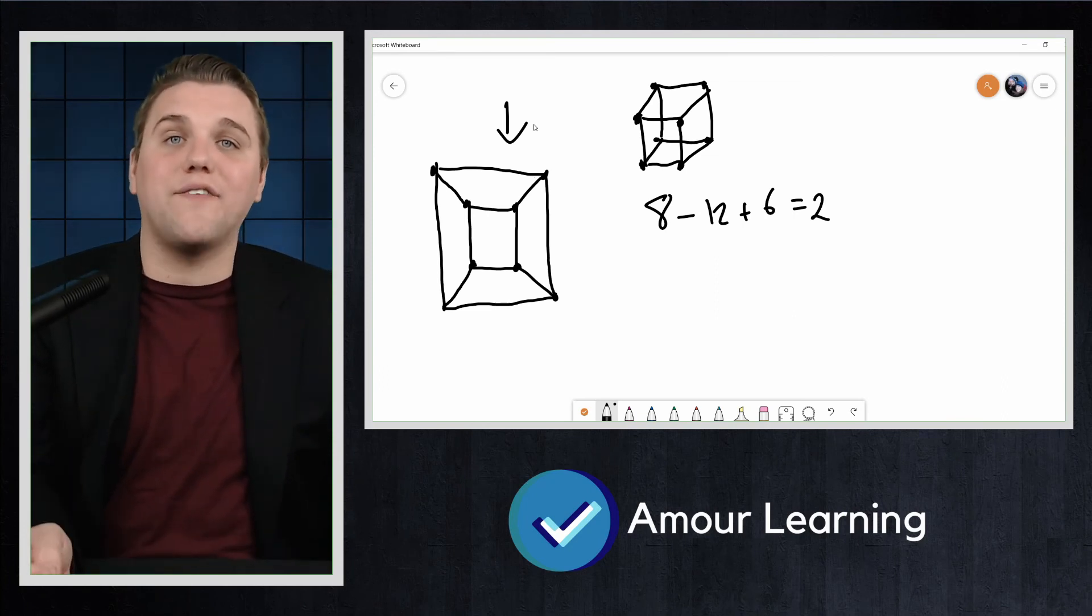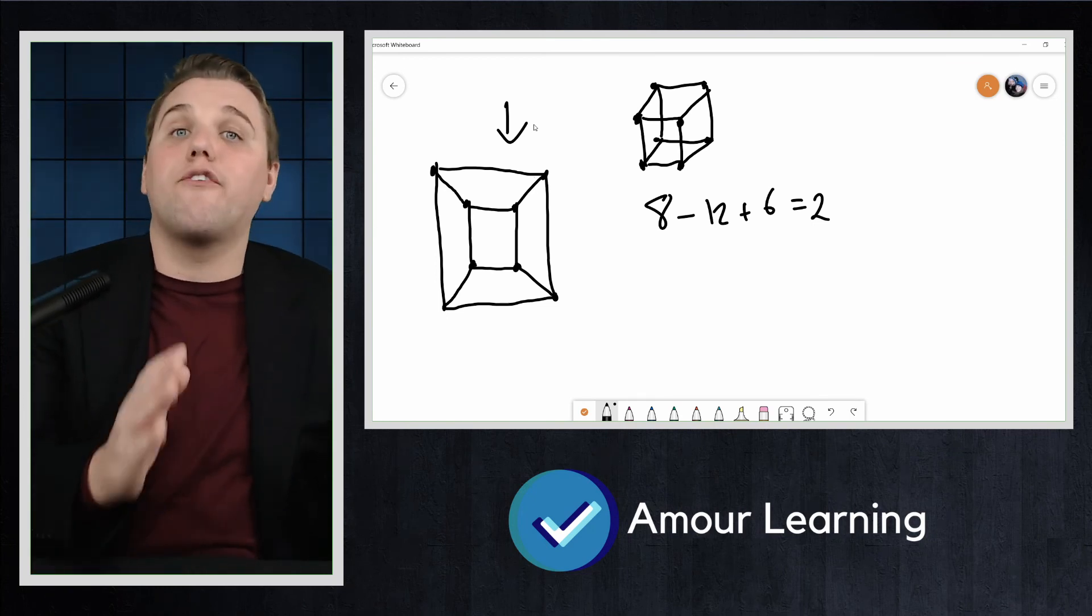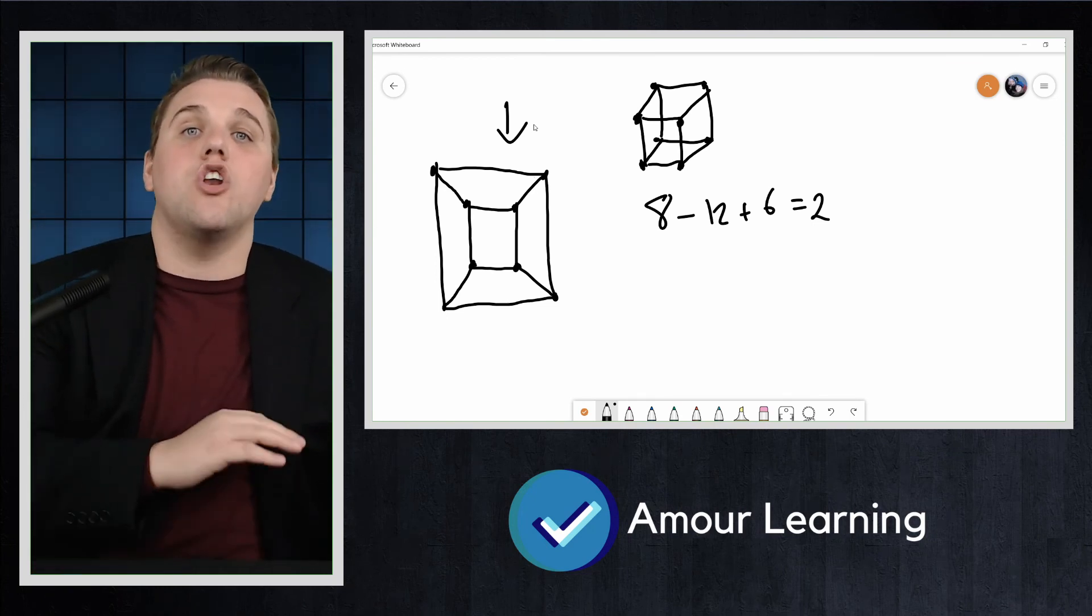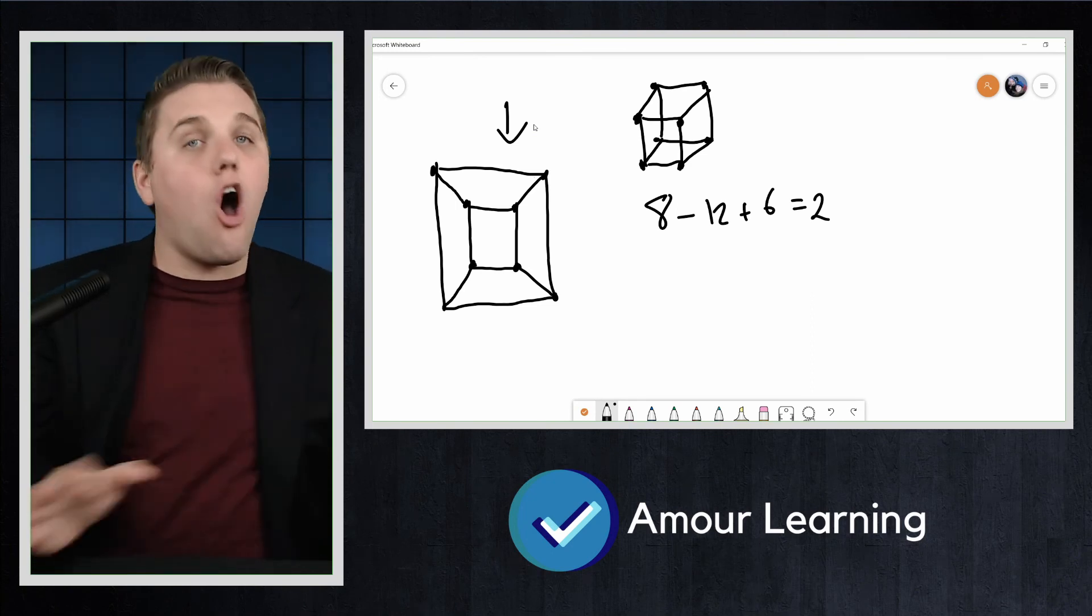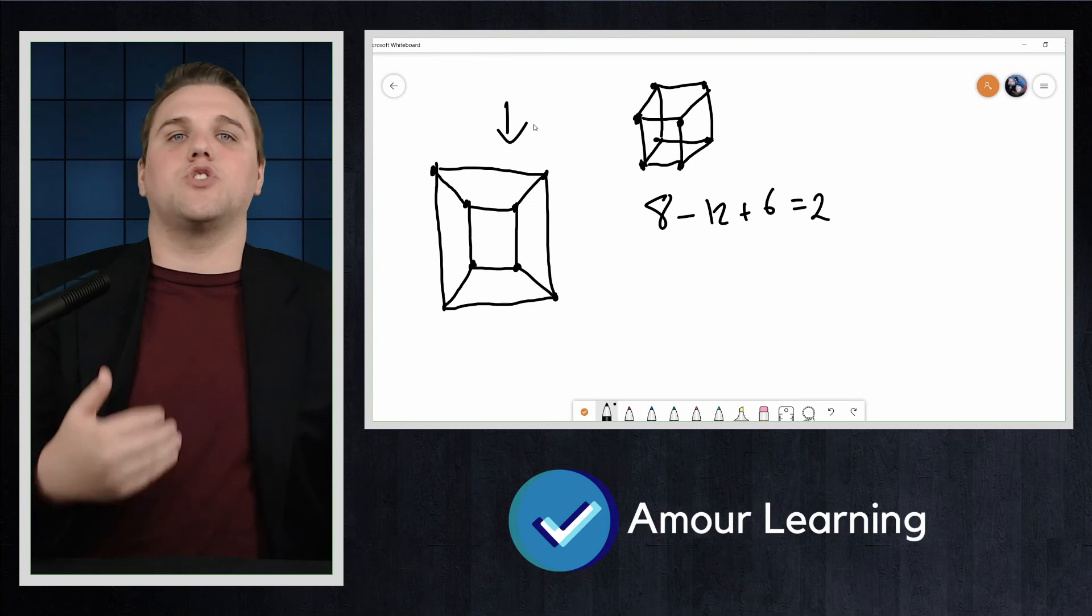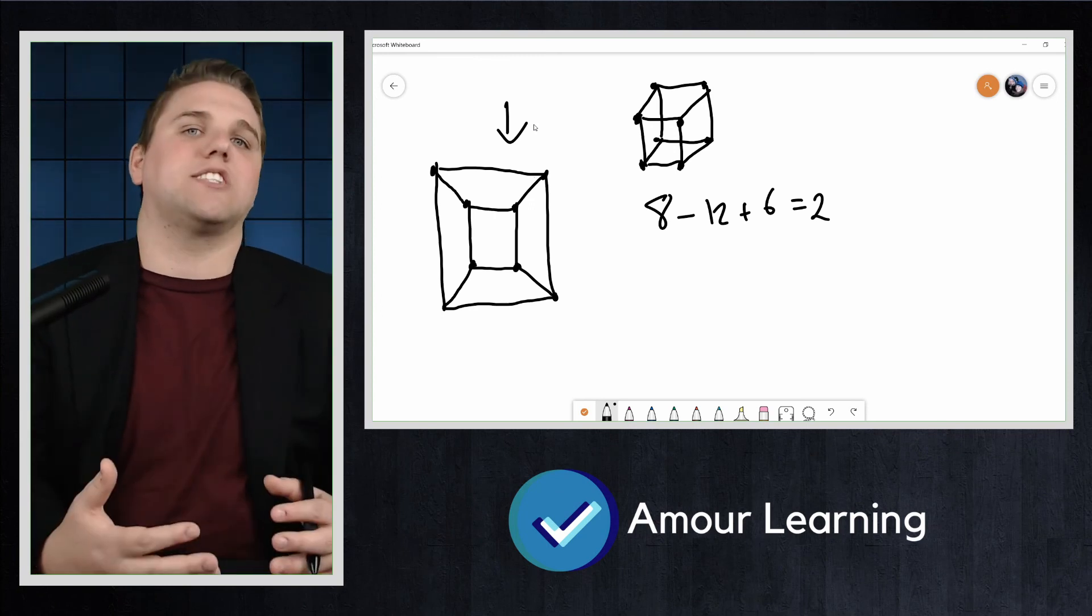We also can apply the same sort of reasoning we use for graphs in other contexts to convex polyhedra. For example, we know that there is no convex polyhedron with 11 vertices, all of degree 3, as this would make 33 halves edges, which is not possible.